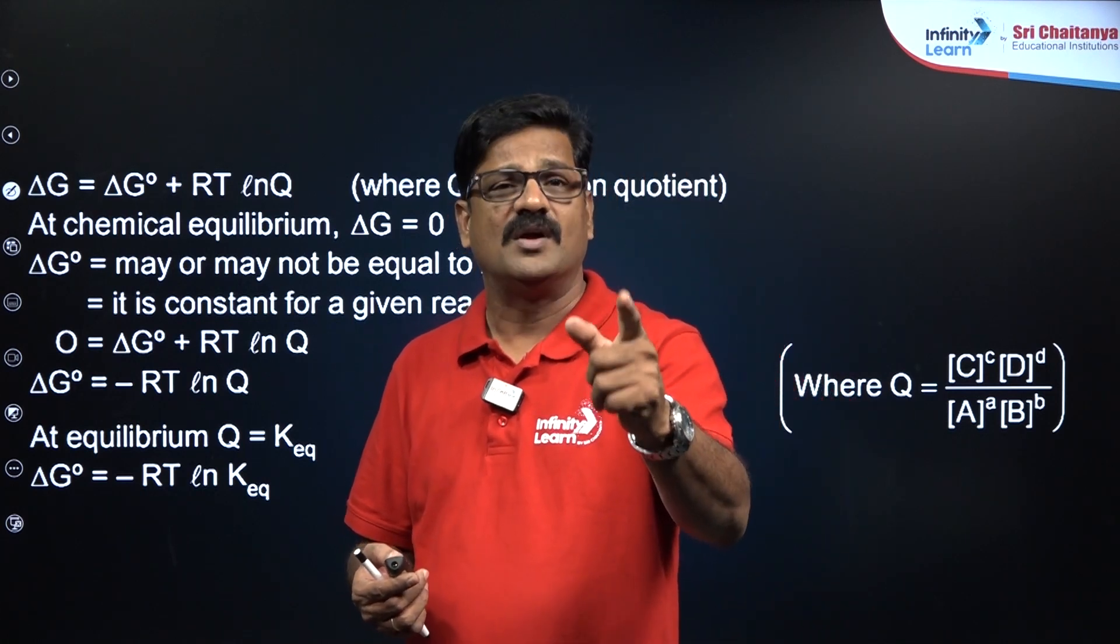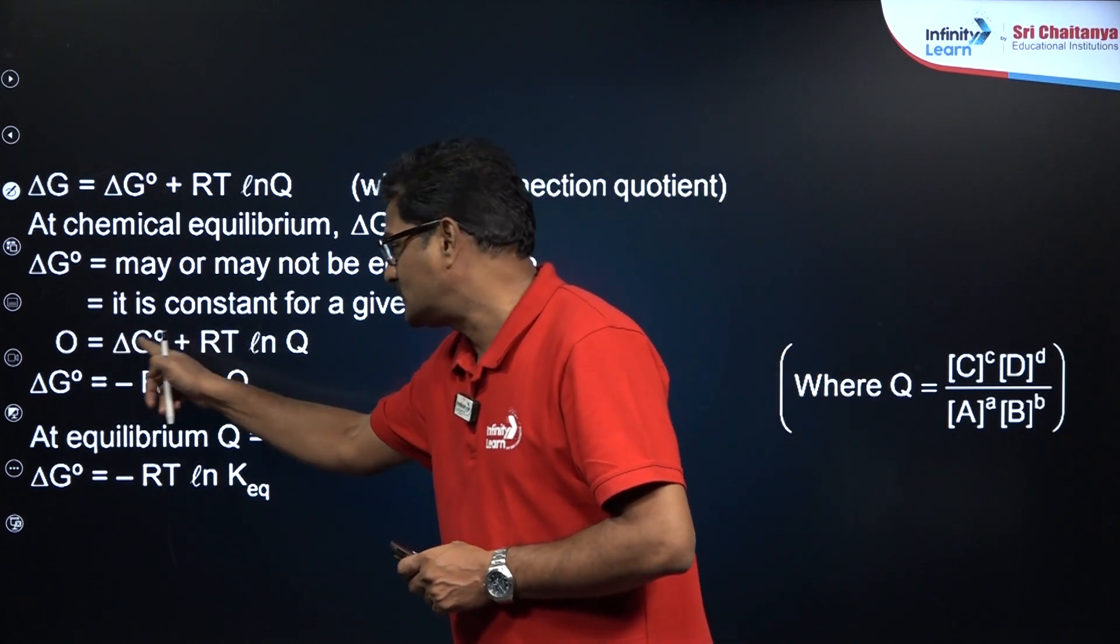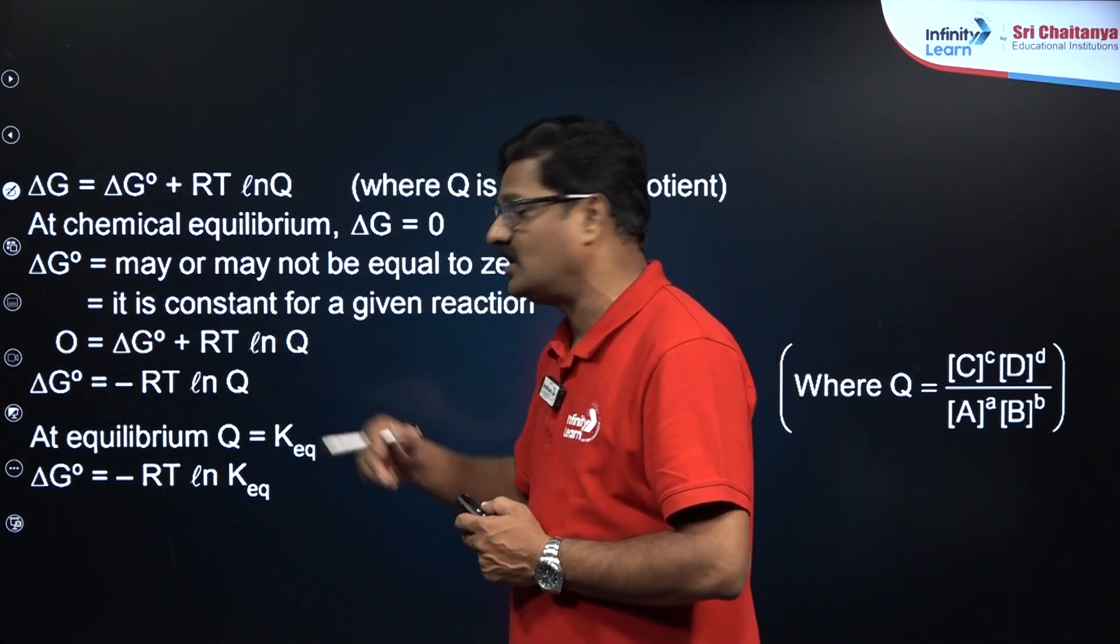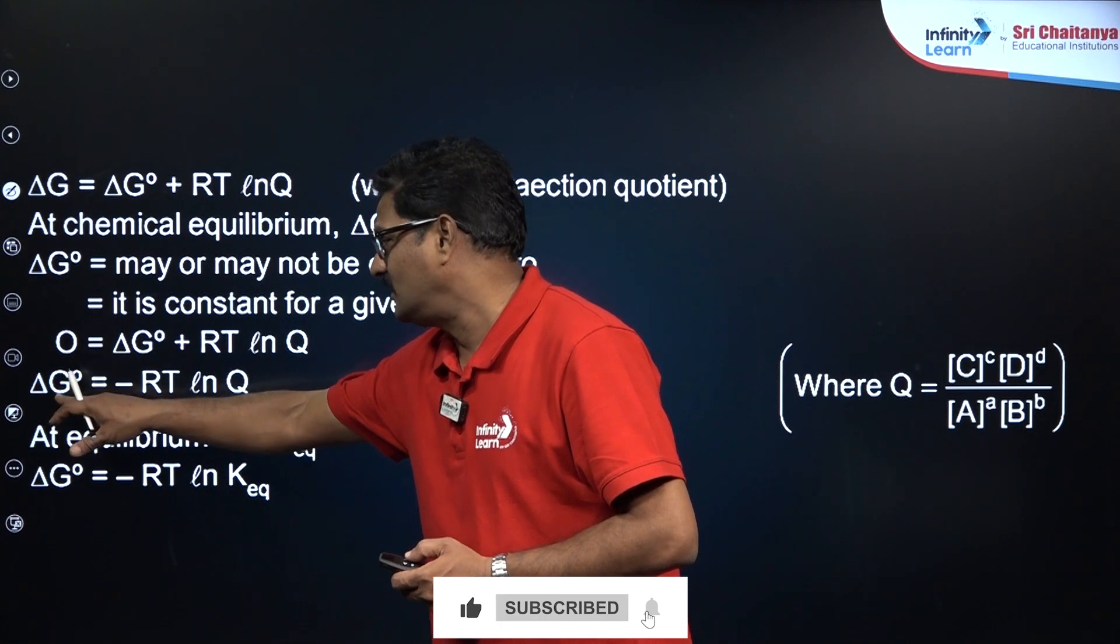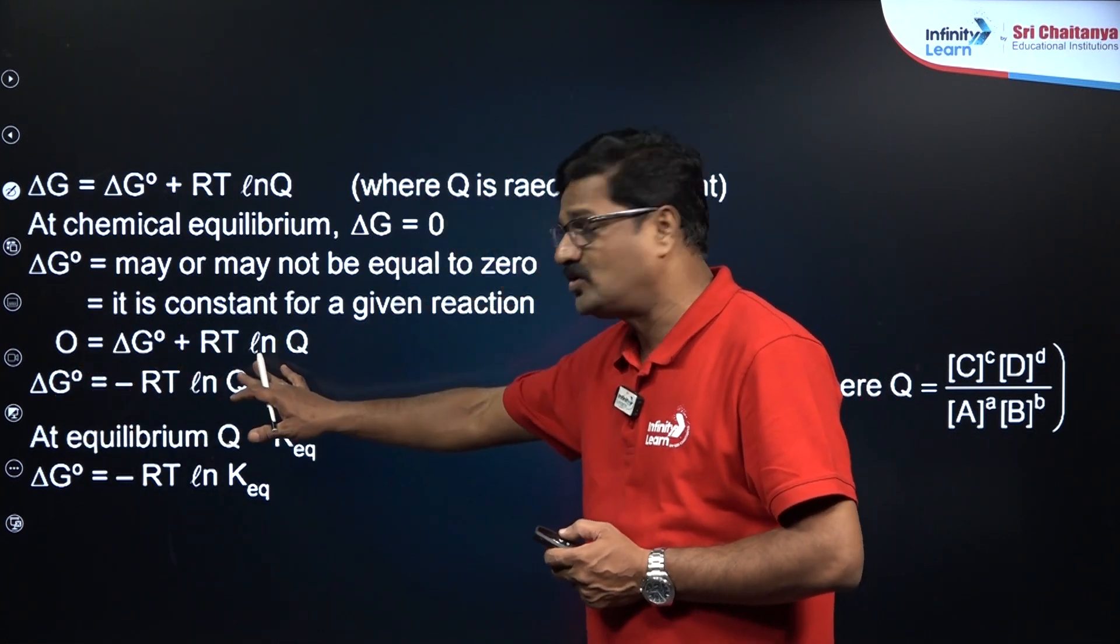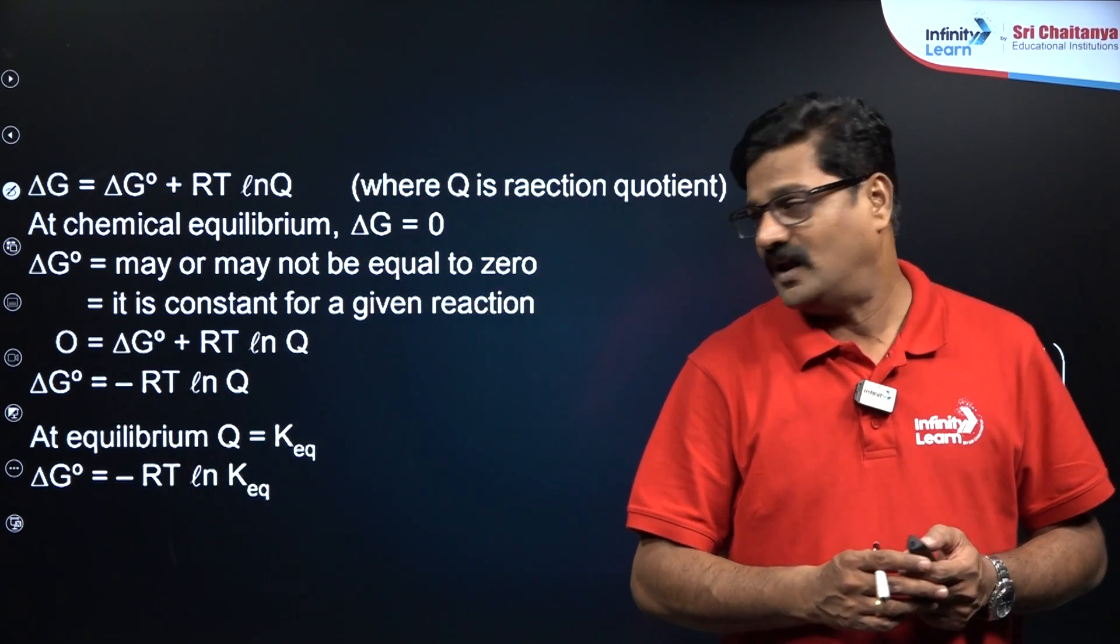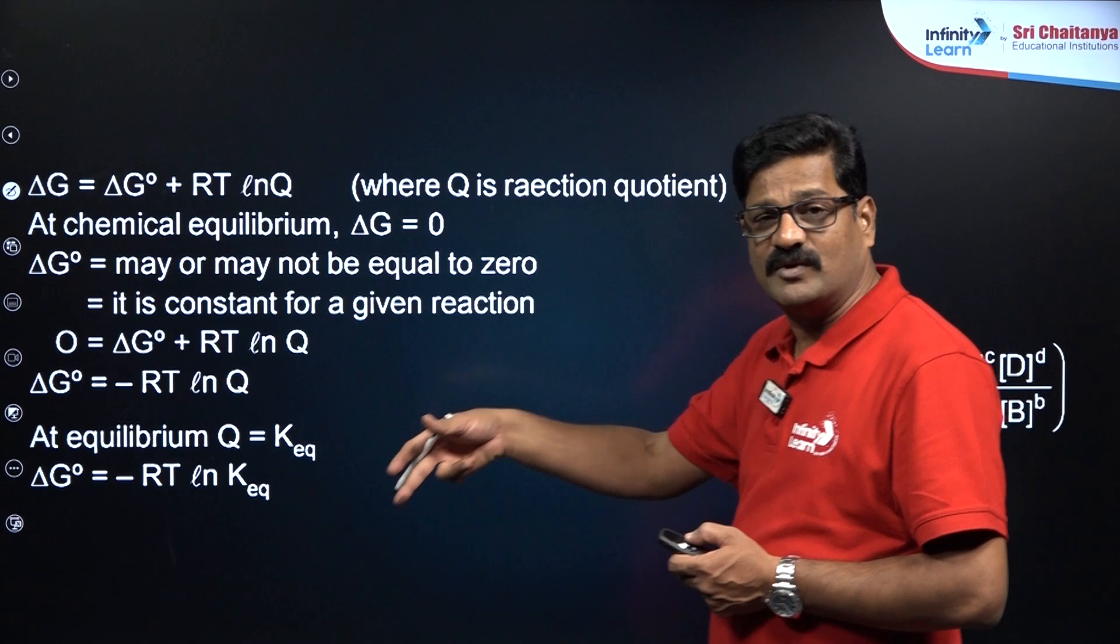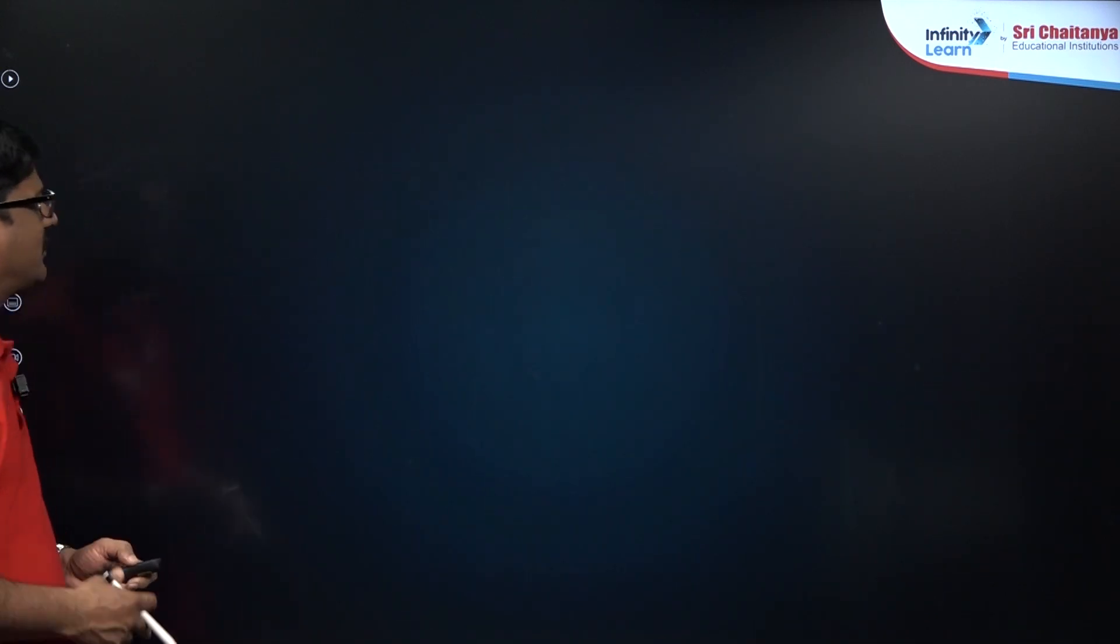So, zero equals delta G naught plus RT ln Q. You take G naught to this side: delta G naught equals minus RT ln Q, which means ln K_c. Delta G naught equals minus RT ln K_c, that is equilibrium constant, and that RT values are taken in the standard state.